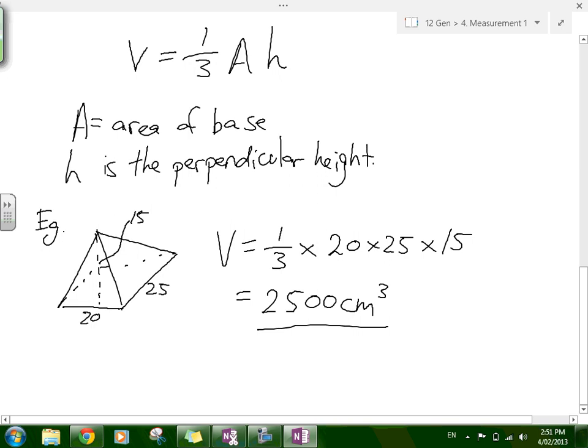So you can simply work out the area times the perpendicular height, multiplying it by a third or dividing it by three. So it's a third of the volume of a prism. Any questions about it?